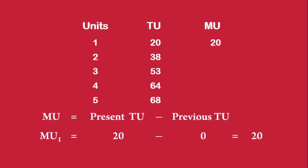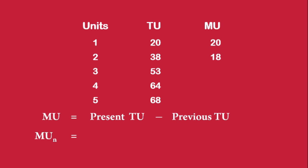Applying the same technique: the Marginal Utility of the second Apple is 38 minus 20. The present Total Utility is 38 units, the previous Total Utility is 20 units, so Marginal Utility is 18. The formal formula is: Marginal Utility of the nth unit is equal to Total Utility of n units minus Total Utility of n minus 1 units.